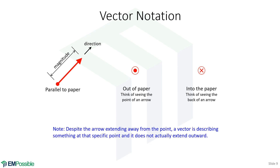One thing that tends to be confusing: whenever we draw vectors, this is something associated with a single point, but we have to draw it extending away. Don't confuse this — this vector has nothing to do with what's happening over at the arrow tip. It's only what's happening at this single, infinitely small point. It's very easy to say whatever's happening here is going to smear over to wherever the arrow points, but the vector itself is not implying that. Really, we should draw this infinitely small, so we'd have a tiny arrow on top of that point — but then we couldn't see it. So don't think that just because the vector points away from that point, we're talking about anything happening over there. We're talking about something happening at this single point.